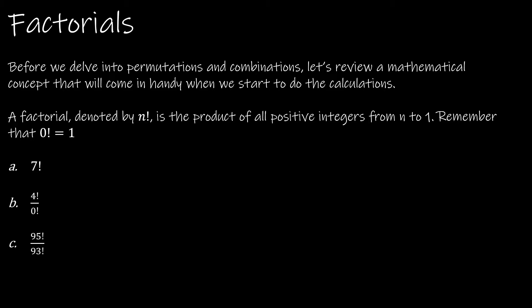Before we talk about permutations and combinations, we do have to review something called a factorial. It's a simple concept. A factorial, denoted by the exclamation point, is the product of all positive integers from whatever our value is — using n as our variable — down to one. You decrease the value by one each time until you get to one. Also note that zero factorial is equal to one. I'm going to show you how to calculate this in Excel, but for now we're just going to do things by hand.